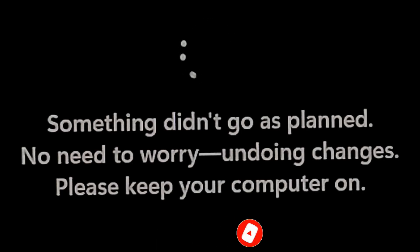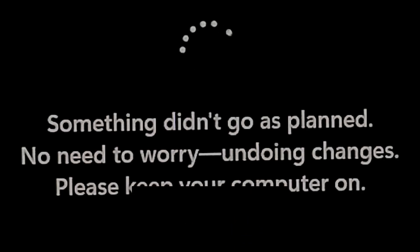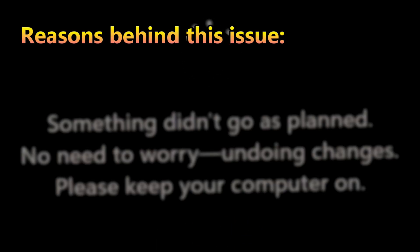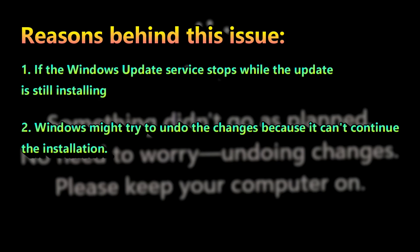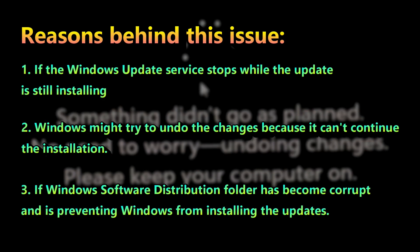There are several reasons behind this problem. Number one: if the Windows Update service stops while the update is still installing. Number two: Windows might try to undo the changes because it can't continue the installation. Number three: if the Windows software distribution folder has become corrupted and is preventing Windows from installing the updates.